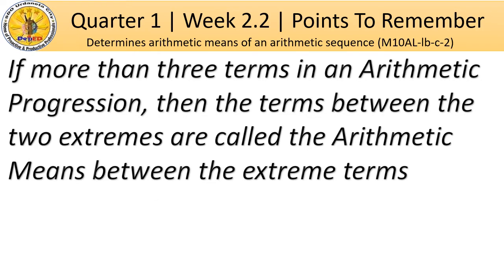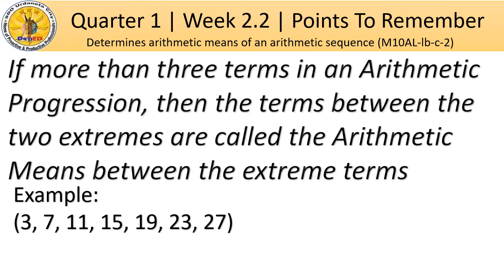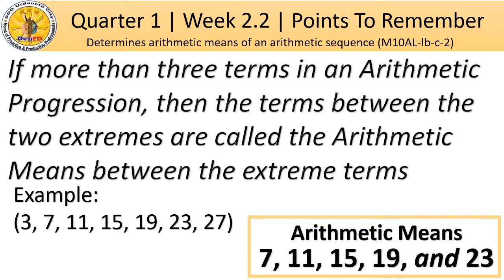If there are more than three terms in an arithmetic progression or sequence, then the terms between the two extremes are called the arithmetic means between the extreme terms. In the example 3, 7, 11, 15, 19, 23, and 27, the terms 7, 11, 15, 19, and 23 are the arithmetic means between the two extreme terms 3 and 27.